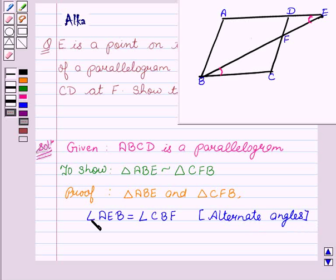And angle A equals angle C, since they are opposite angles of a parallelogram which are equal.